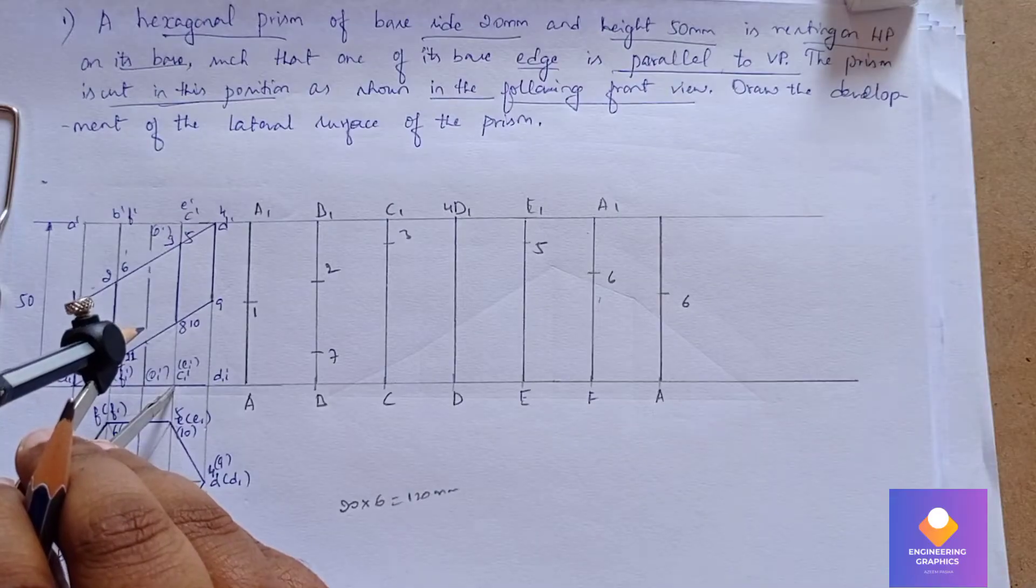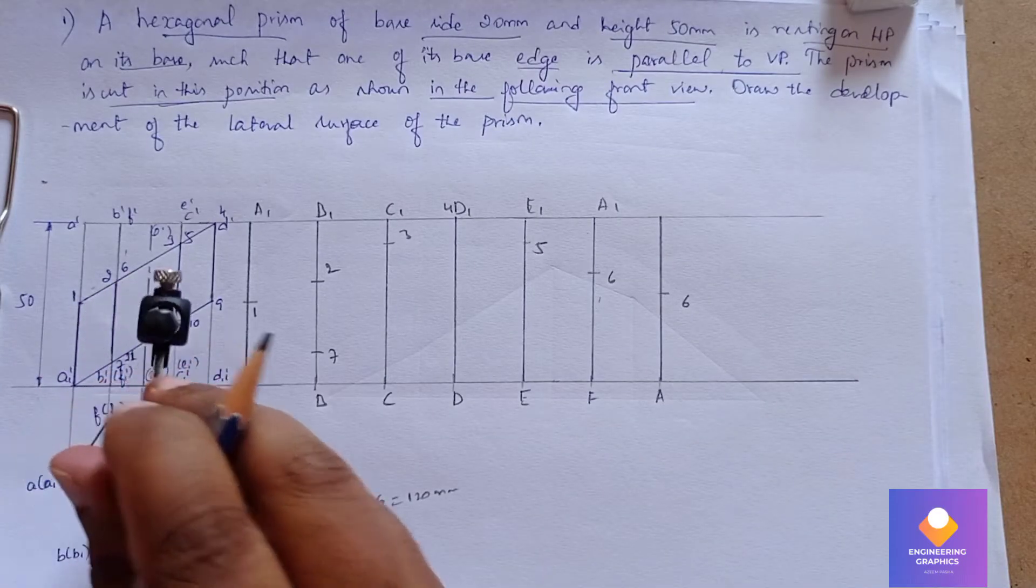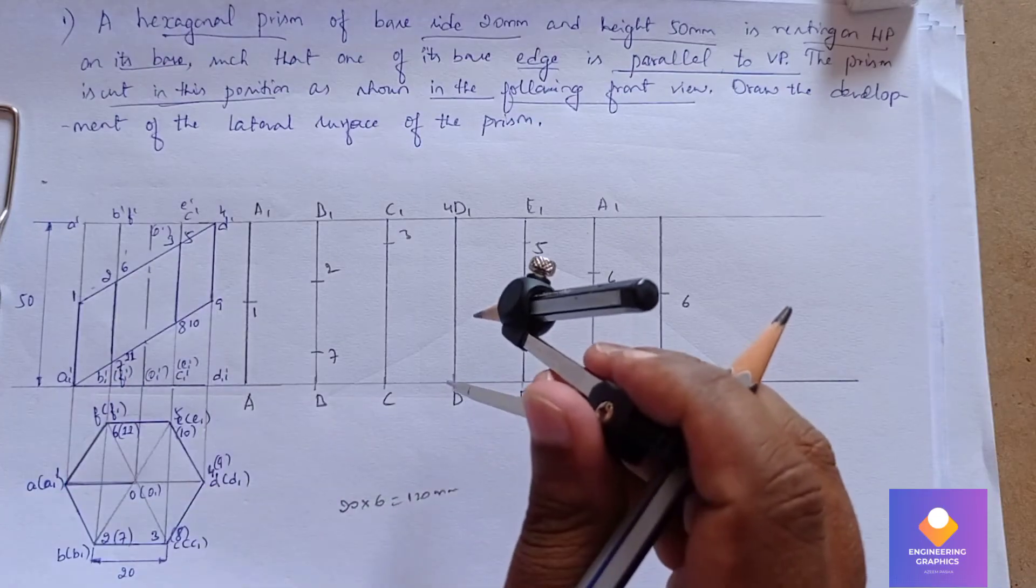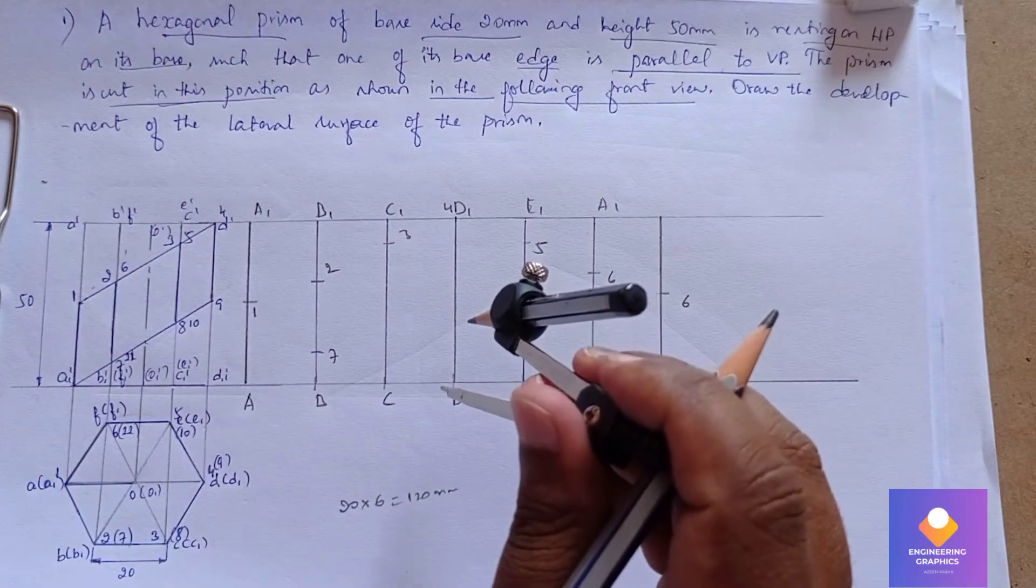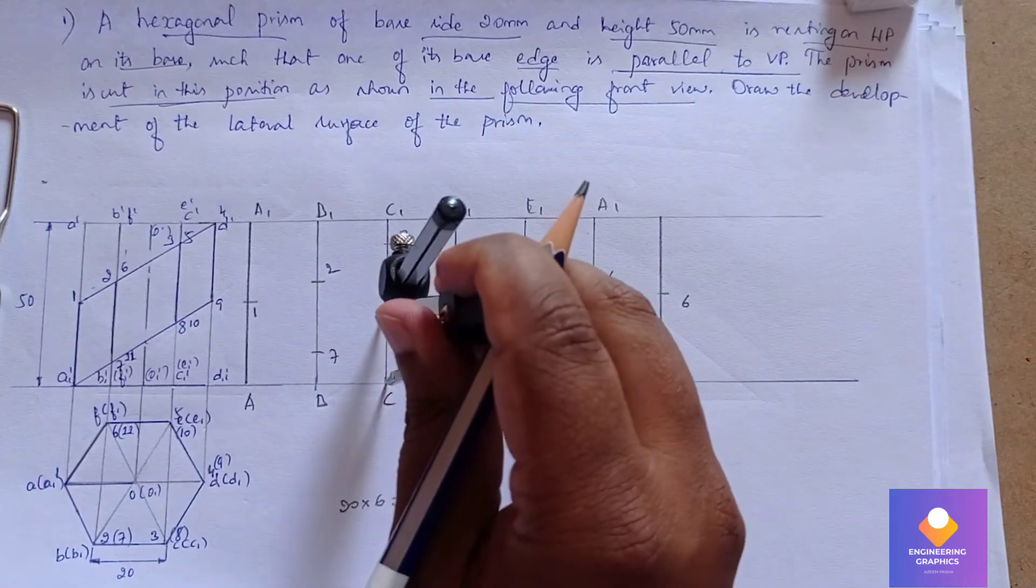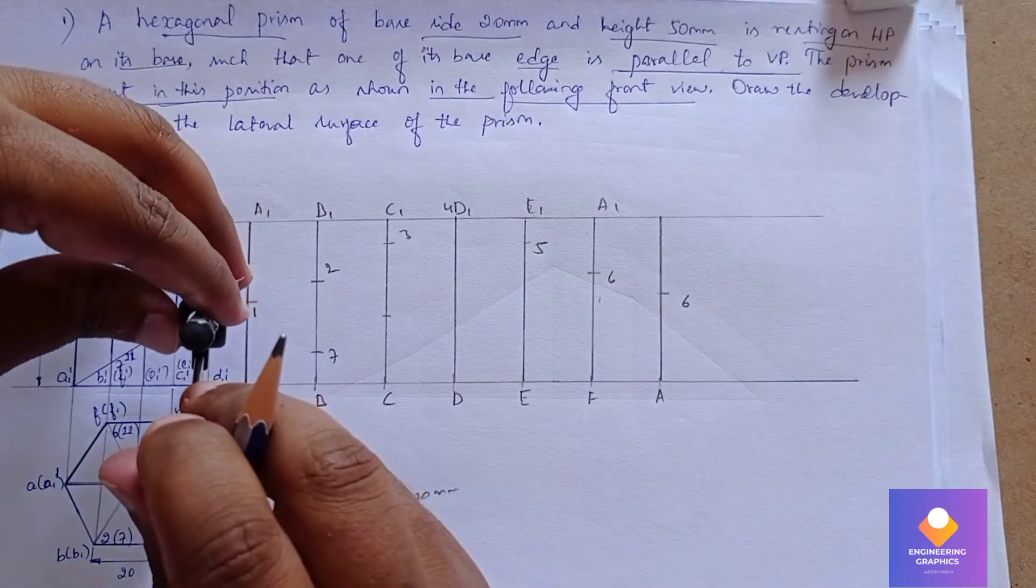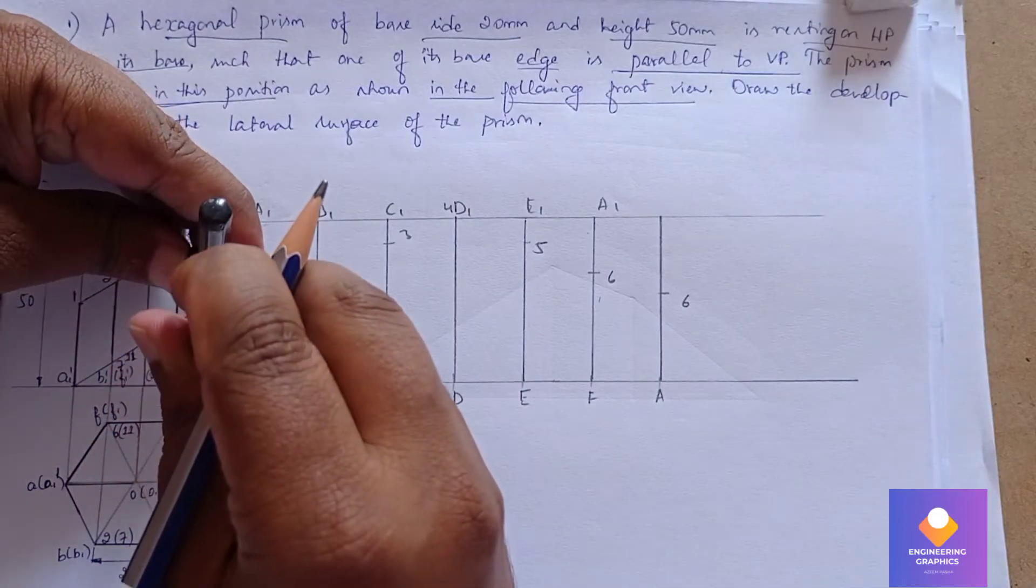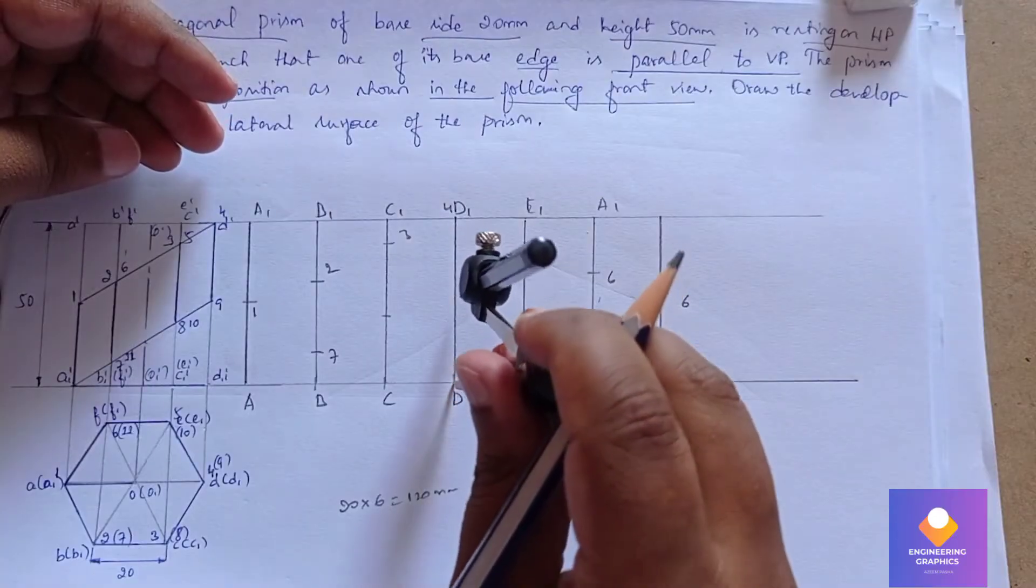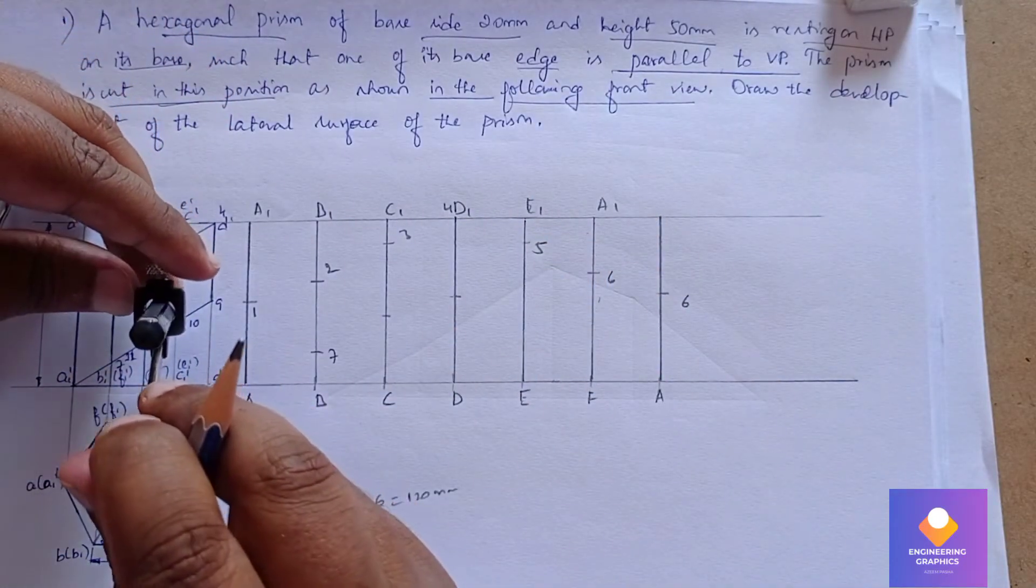We need to cut it on the vertical edge C here. That is point number 8. Then point 9 we need to cut it on the vertical edge D, and then point 10.